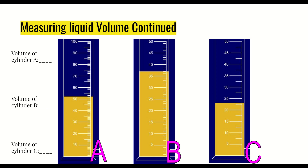Let's practice reading graduated cylinders. Keep in mind the intervals — the little dashes — will change in each one, so pay attention. For cylinder A, the volume is 52 milliliters: we go to 50 and count 1, 2 more intervals. It's milliliters because it's a liquid. For cylinder B, the volume is 37 milliliters: we go up to 35, then count 36, 37 — the scale is going by 5s with intervals counting by 1s, so we get 37 milliliters.